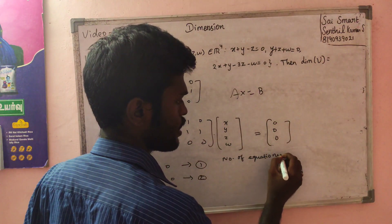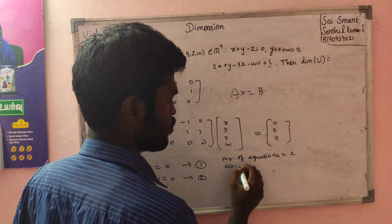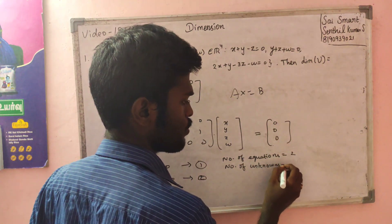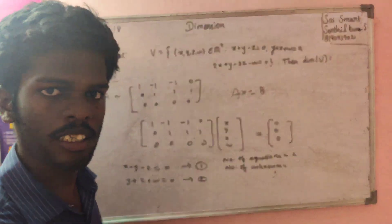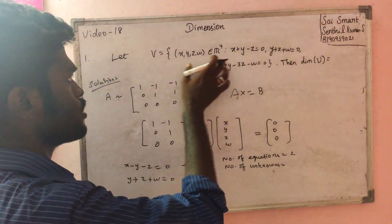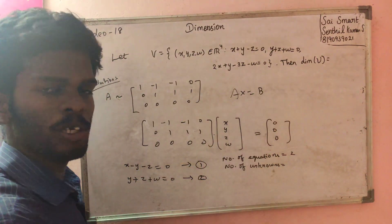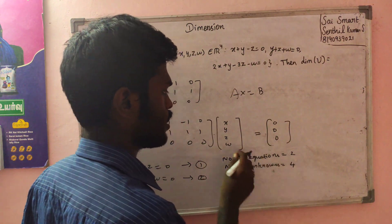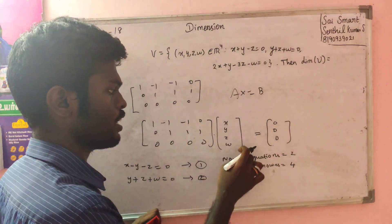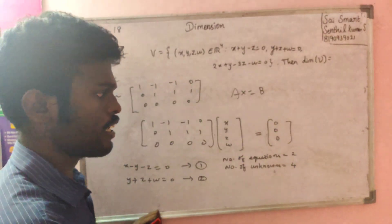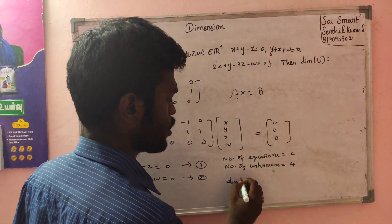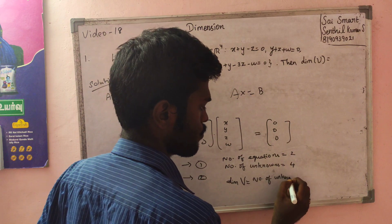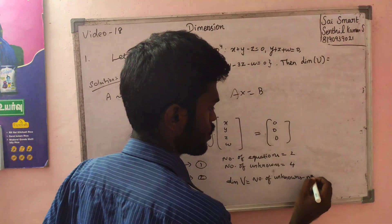The number of unknowns and equations are being discussed. The intention is to find the dimension of V. The number of unknowns is 4 — that is x, y, z, w. The dimension of V equals number of unknowns minus number of equations.